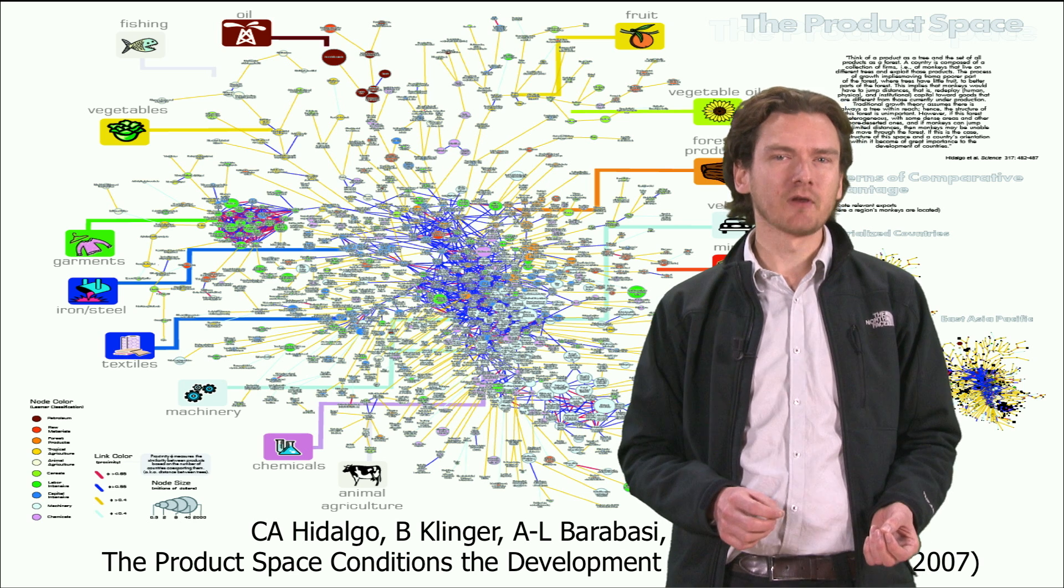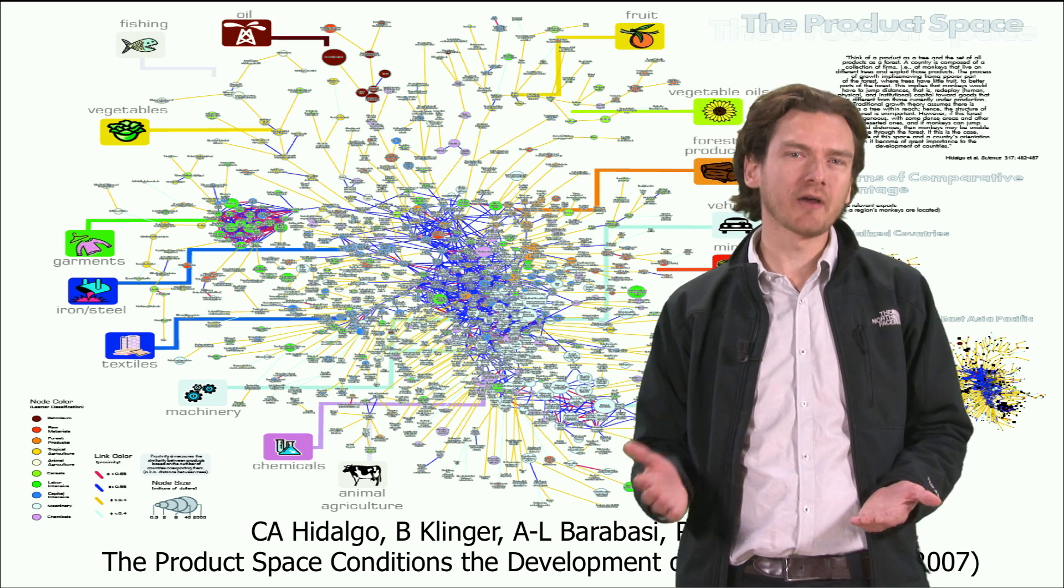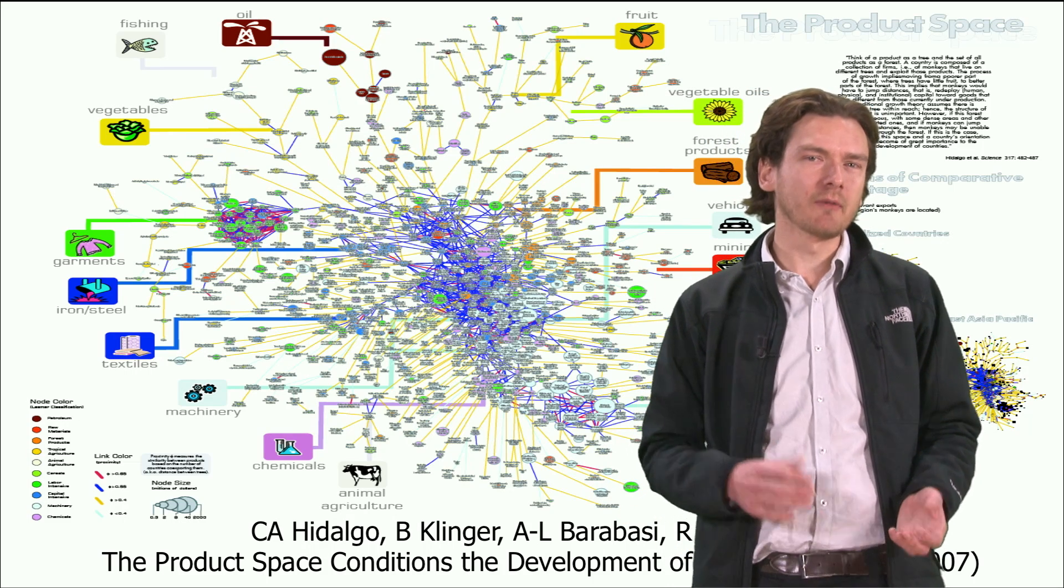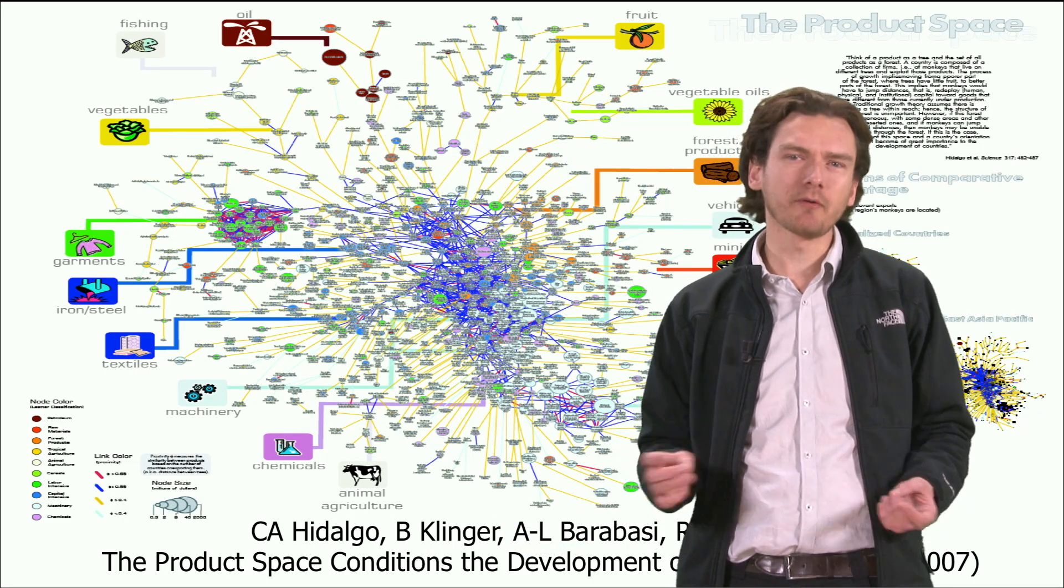Each edge indicates the payments that are made as companies in that sector have to buy materials from other industrial sectors in order to produce their products. So the car industry has to buy from the glass industry, the rubber industry and the steel industry.